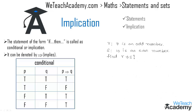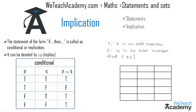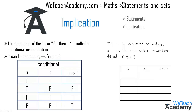Now consider statement r: '7 is an odd number,' and statement s: '10 is an even number.' Let us find the truth value for r implies s using a truth table with three columns. If both r and s are true, then r implies s is true. If r is true and s is false, then r implies s is false. If r is false and s is true, then r implies s is true. If both r and s are false, then r implies s is true.